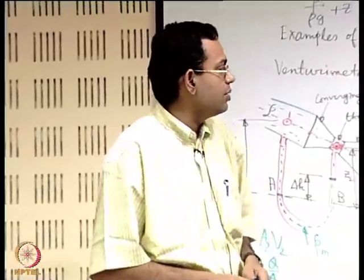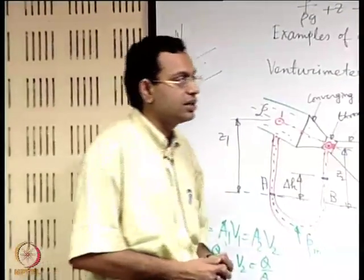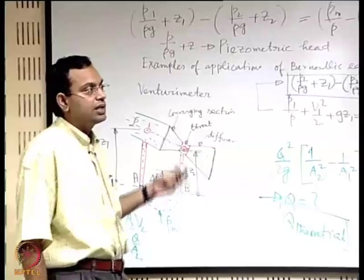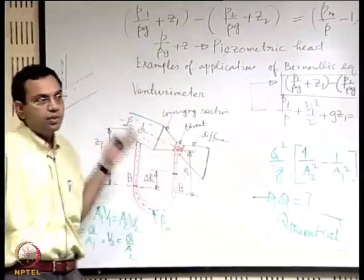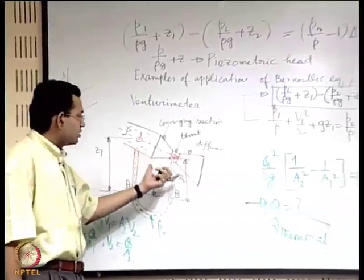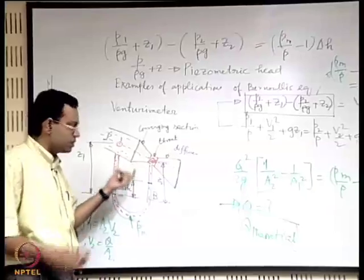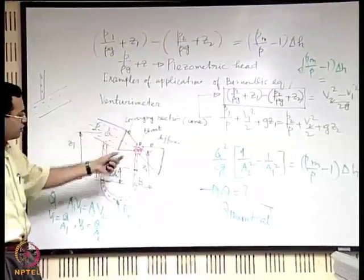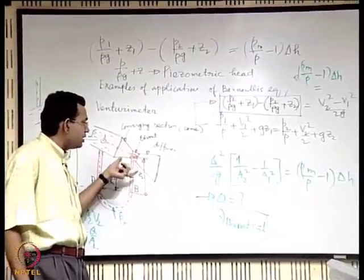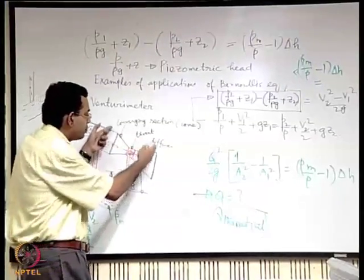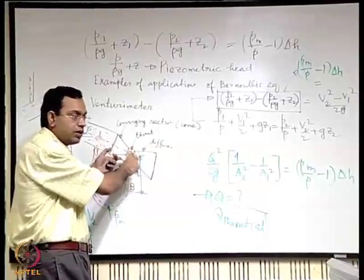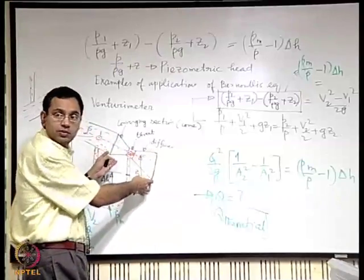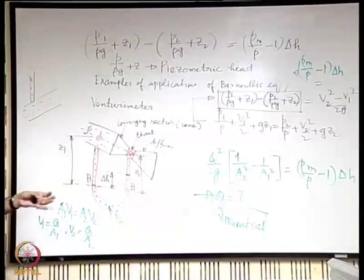In our previous lecture, we were discussing about the Venturimeter and we will continue with that as an example. The purpose of the Venturimeter was to measure the volume flow rate through a pipe. For that, we utilize an arrangement where you have a converging section, sometimes called a converging cone, then a throat where the area of cross section is a minimum, and then a diverging section so it fits back with the pipe.